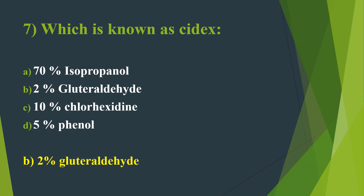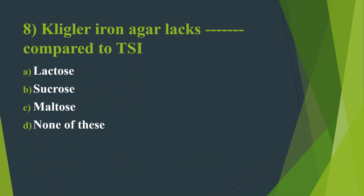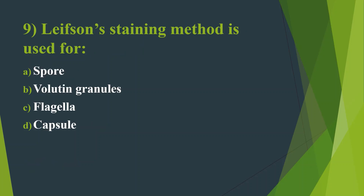Eighth question: Kligler Iron Agar lacks — compared to TSI (Triple Sugar Iron Agar). Option A: Lactose. Option B: Sucrose. Option C: Maltose. Option D: None of these. Here the answer is Option B, Sucrose. TSI contains 1% glucose, 1% sucrose, and 1% lactose. Kligler Iron Agar contains lactose and glucose only — sucrose is not present.